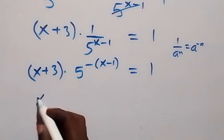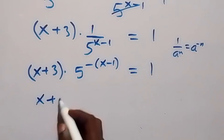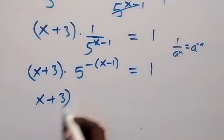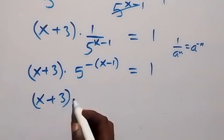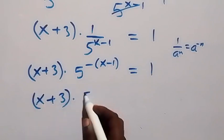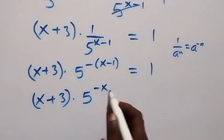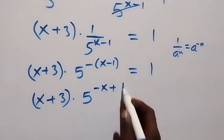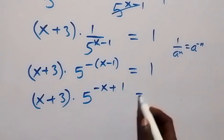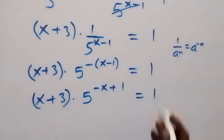Opening this bracket gives us x plus 3, then multiplied by 5 raised to the power minus x plus 1, which equals to 1.